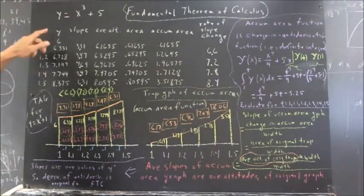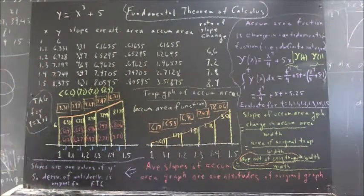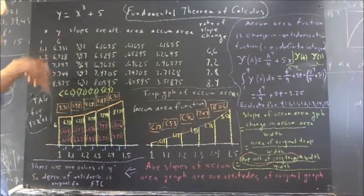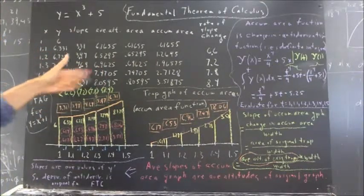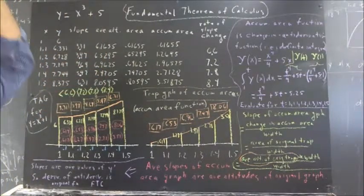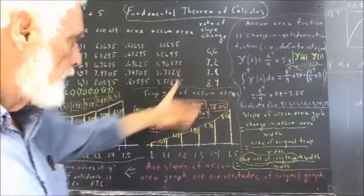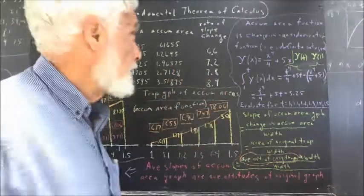Where the changes weren't all that great, changes in the function values weren't all that great. The curvature of the function is small enough that we actually get a pretty good approximation here.